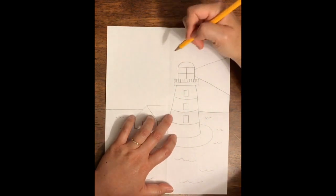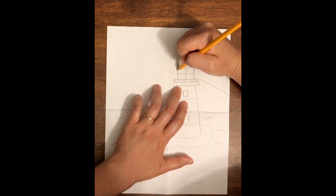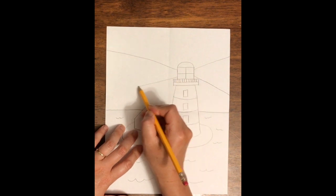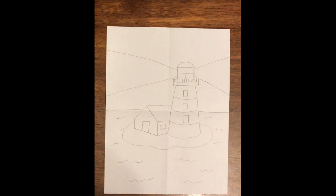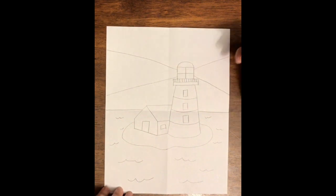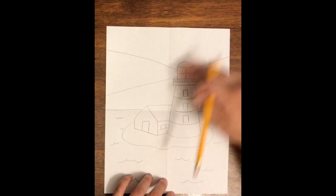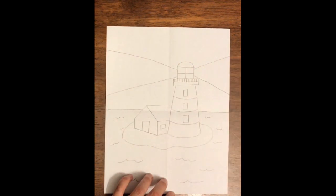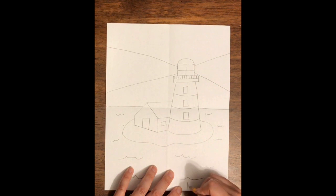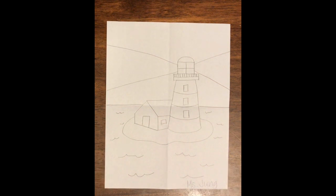There you go, boys and girls. You now have your lighthouse and you can color however you want. If your lighthouse is in the dark or at night, you may want to color the sky a darker color and then the light coming out of the lighthouse a lighter color, but it's up to you. Go ahead and write your name. If you're going to share with us, feel free to write your name, but make sure you're only writing your first name. This one's my drawing, and that is how you draw a lighthouse.